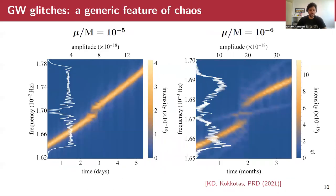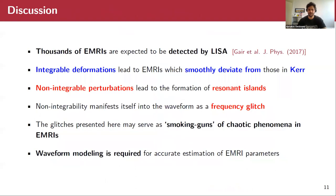Now, this is not just an artifact of our spacetime, which is theory agnostic. We have used also the Manko-Novikov spacetime, which is a solution of general relativity, and we also see these features, these glitches. Therefore, we can safely assume that this is a generic feature of chaos.